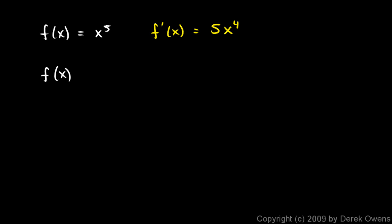If f of x is x to the eighth, then f prime of x is equal to 8x to the seventh. And it's as simple as that.